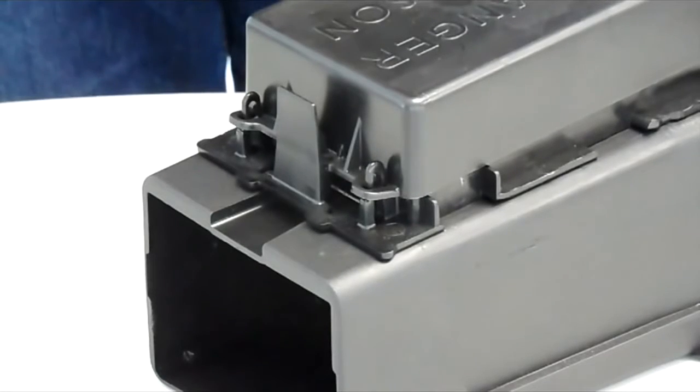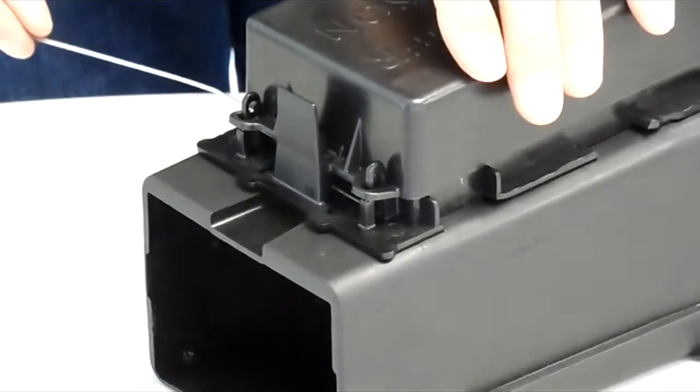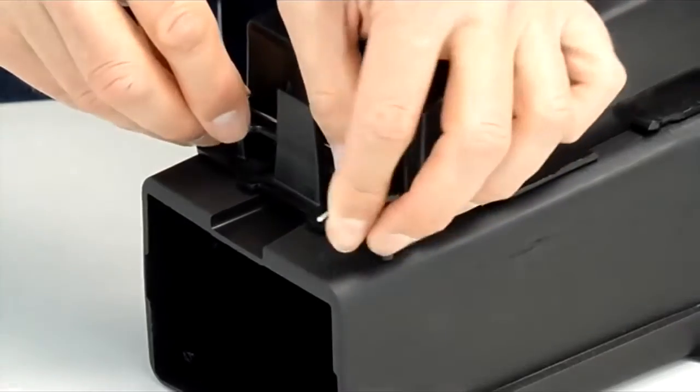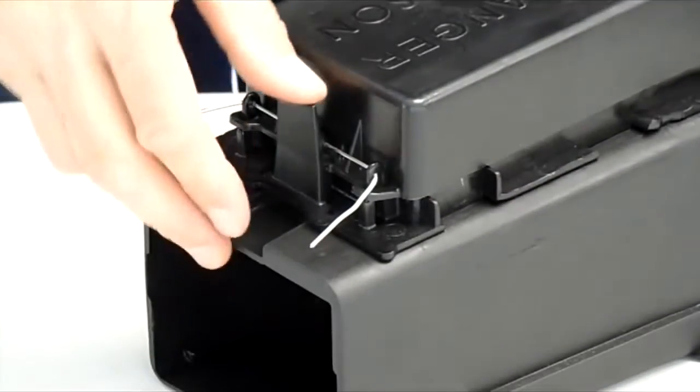As an extra safety feature, a length of wire or a cable tie can be fitted through the loops at each end of the lid. This will prevent unauthorized access to the bait.